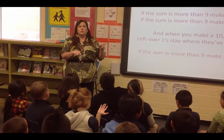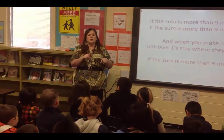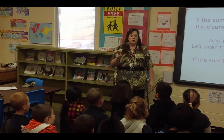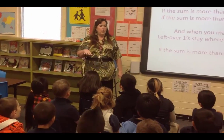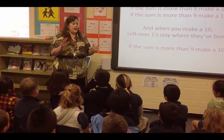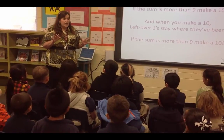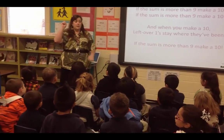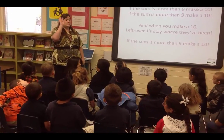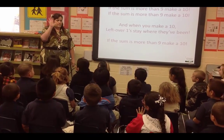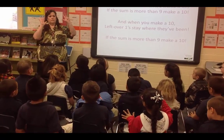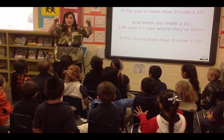Let's count to twenty using our tens and ones. One, two, three, four, five, six, seven, eight, nine, ten. Ten one-ten, two-ten, three-ten, four-ten, five-ten, six-ten, seven-ten, eight-ten, nine-ten, twenty.